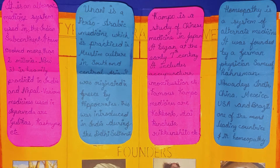Ayurveda is an alternative medicine system used in the Indian subcontinent. It has evolved over more than two millennia and is heavily practiced in India and Nepal. Various medicines used in Ayurveda include gulikas, kashyas, etc.